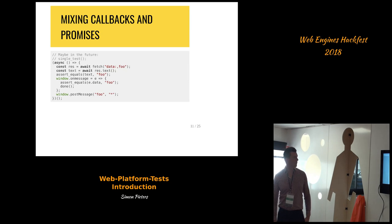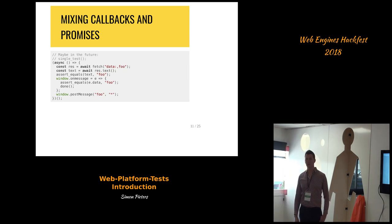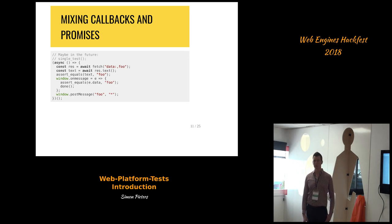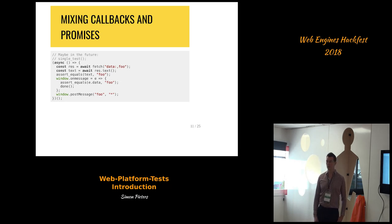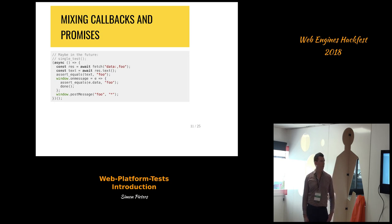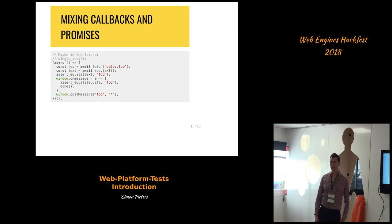If you want to mix callbacks and promises, it's kind of awkward with the promise test because you need to manually create promises. Another way is to just use single-page tests, which will fail if there's an uncaught exception anywhere or if there's an unresolved promise anywhere. In this kind of test you don't need to use stepfunc — you can just use plain functions in callbacks and it will fail the test since there's just one test for the page.